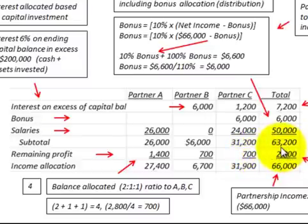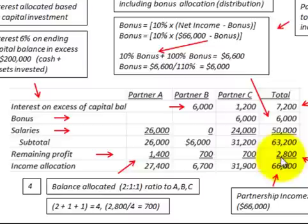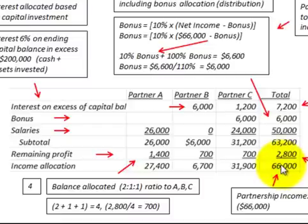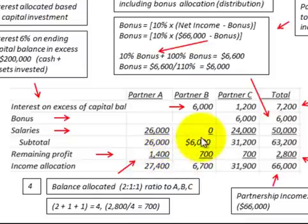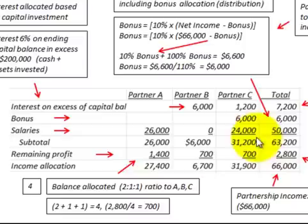Adding the previous subtotal of $63,200 plus the remaining $2,800 gives us the full $66,000 in total profit for the year. Partner A's total is $26,000 plus $1,400 remaining profit equals $27,400. Partner B gets their subtotal of $6,000 plus $700 remaining profit for $6,700. Partner C's subtotal gives them $31,900.